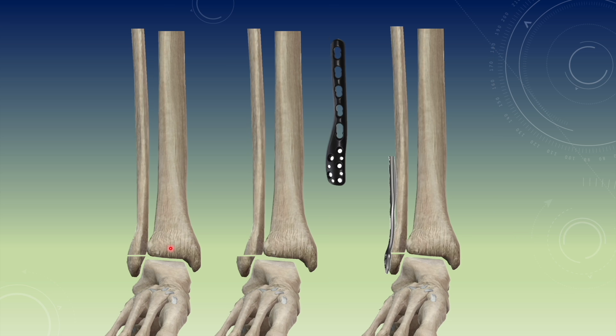For the fracture fixation point of view, you need to be aware of Weber's classification of ankle fractures, in which the lateral malleolus has been used as a marker for classifying the fractures. There is infrasyndesmotic injury if the lateral malleolus fragment is below the syndesmosis, transsyndesmotic injury if the lateral malleolus is at the level of syndesmosis, and suprasyndesmotic injury if the lateral malleolus fracture is above the level of syndesmosis.